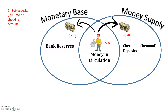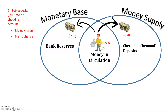When we look at what has happened to the change in the money supply and the monetary base — when Bob takes his $200 and deposits it into his checking account, there is no change in the monetary base. The composition changes: it goes from money being in circulation to being in the bank's reserves. The same is true for the money supply — the composition changes, going from money in circulation to money in checkable deposits.